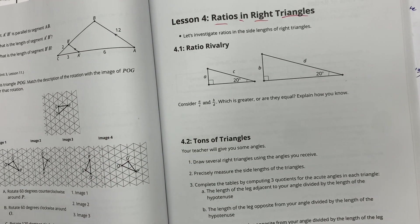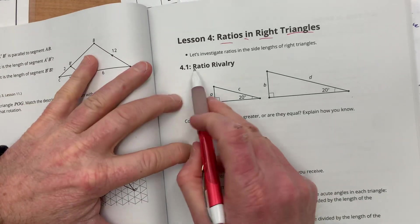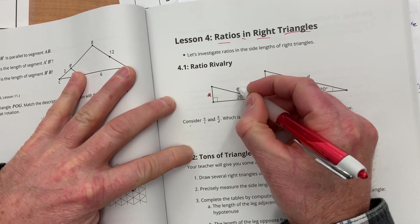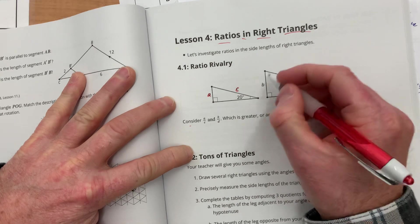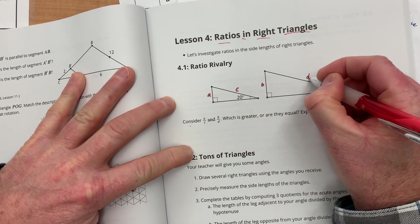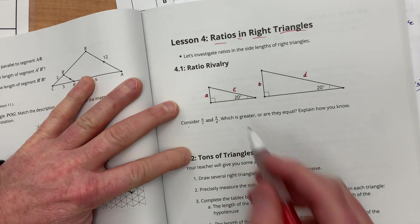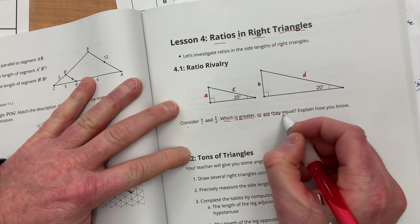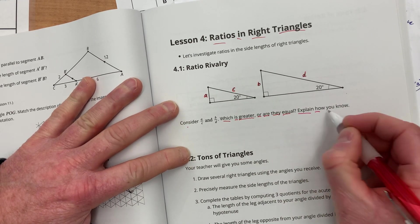So the first question asks you to consider A divided by C and B divided by D, which is greater or are they equal, and explain how you know.